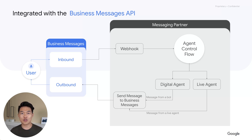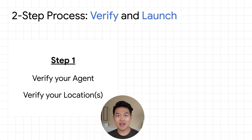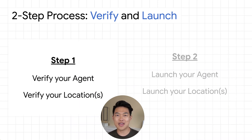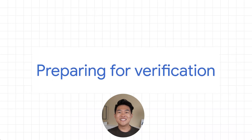After you've worked on your webhook logic and you're happy with what it is capable of and the user journeys it supports, then you're ready to make your conversations discoverable on Google Search and Google Maps. To enable those chat entry points in search and maps for your customers, you need to follow this two-step process. Step one is verifying your agent and verifying locations if applicable. Step two is actually launching the agent and locations. Before you go ahead and verify your agent, make sure they are configured correctly.